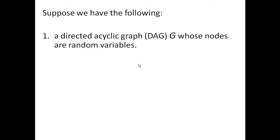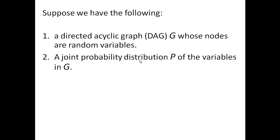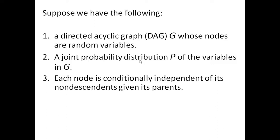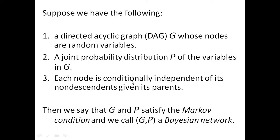Here is a formal definition of a Bayesian network. Suppose we have a directed acyclic graph called the DAG whose nodes are random variables and a joint probability distribution of the variables in the DAG. Each node is conditionally independent of its non-descendants given its parents — this is essential. These conditional dependencies have to hold for the probability distribution relative to the DAG. Then we say that the DAG and the probability distribution satisfy the Markov condition if each node is conditionally independent of its non-descendants given its parents. By non-descendants we mean all those nodes that are either parents of it or descendants of parents of it.